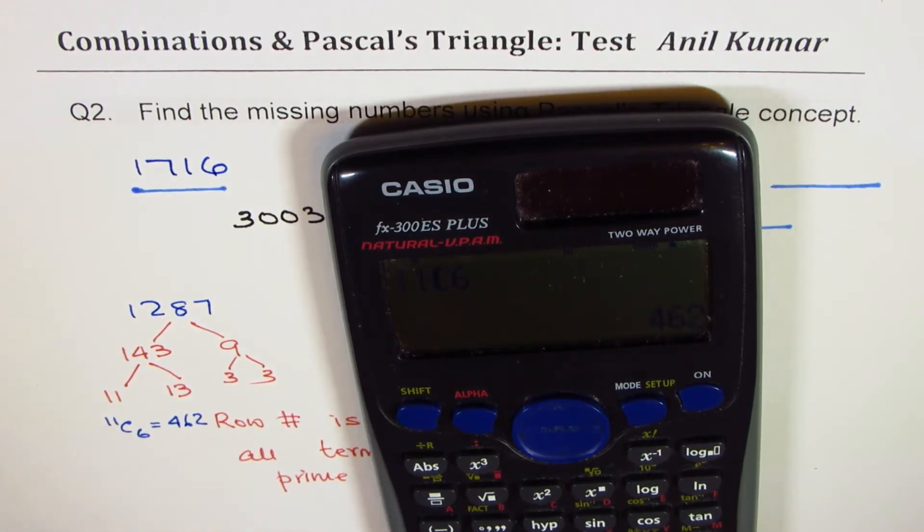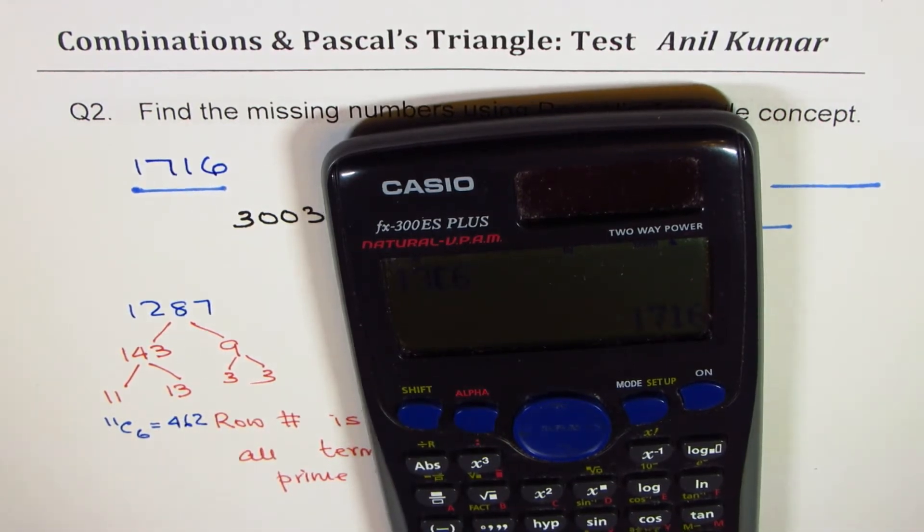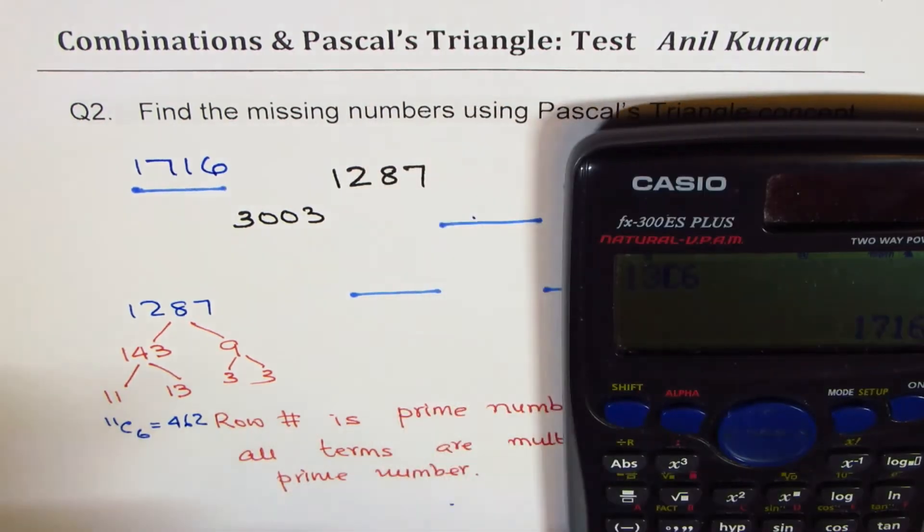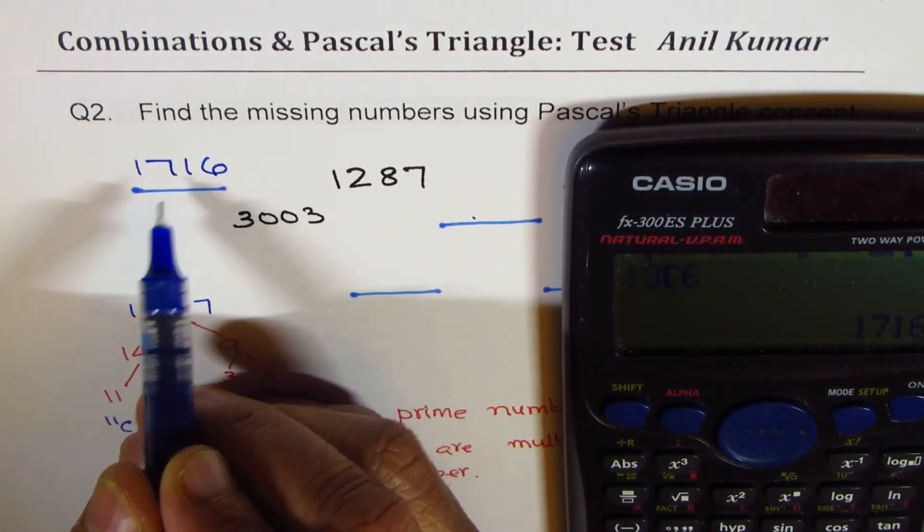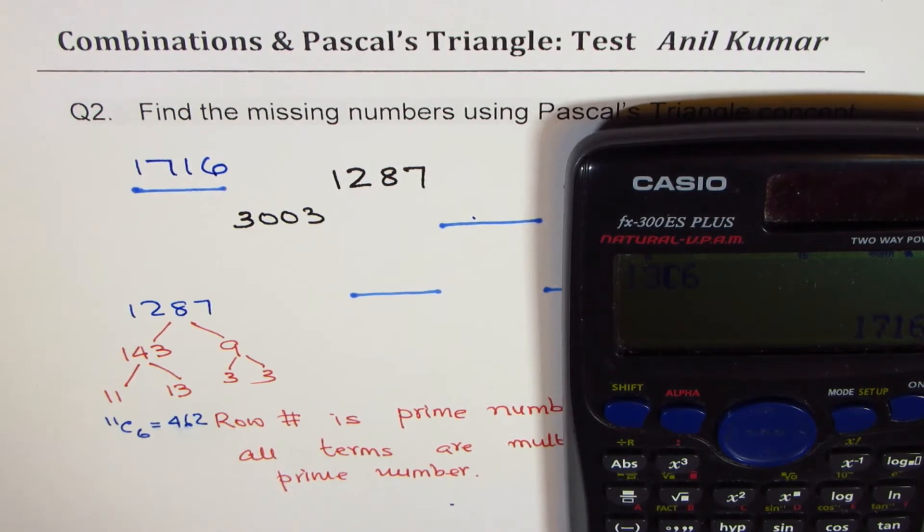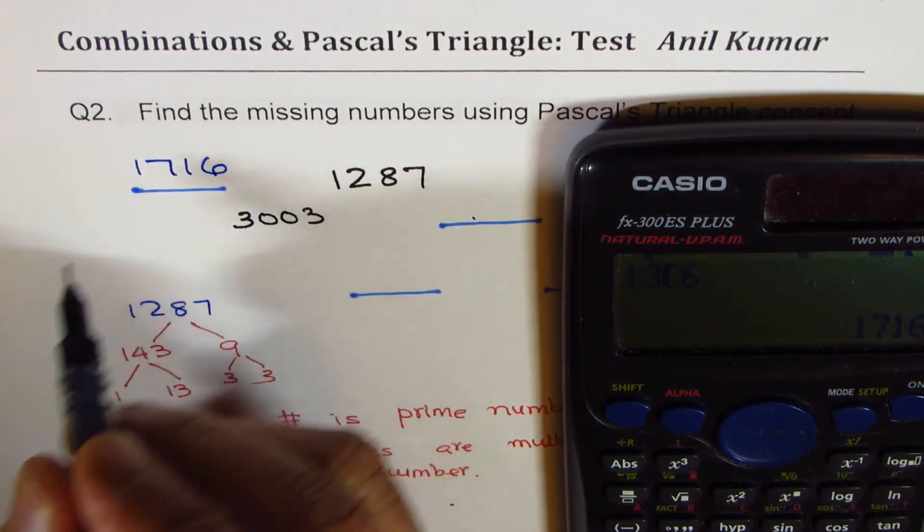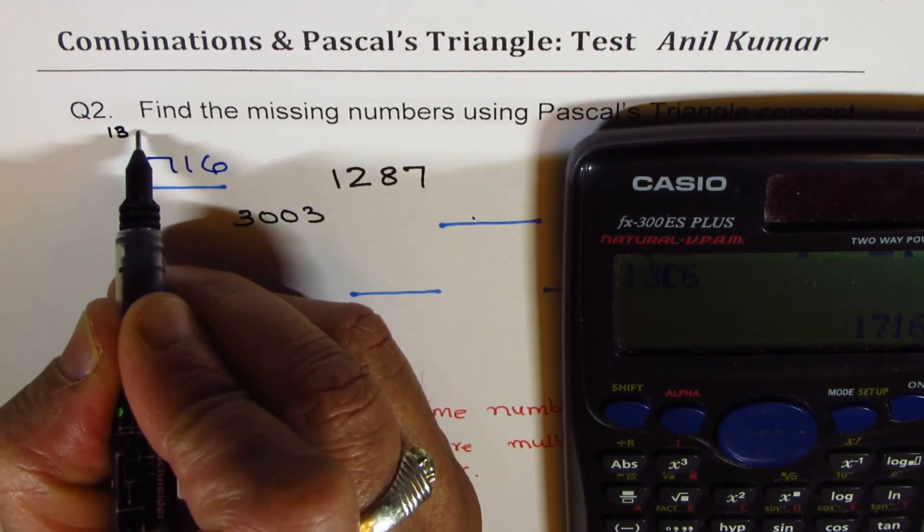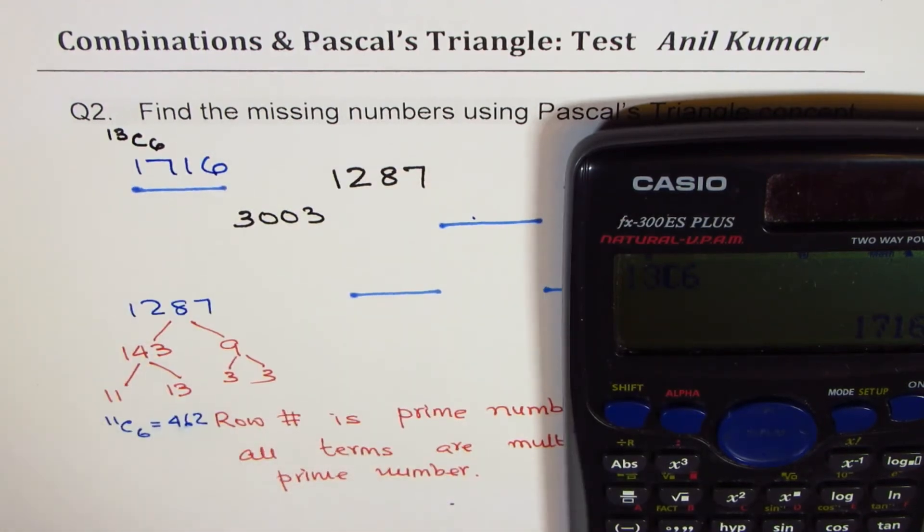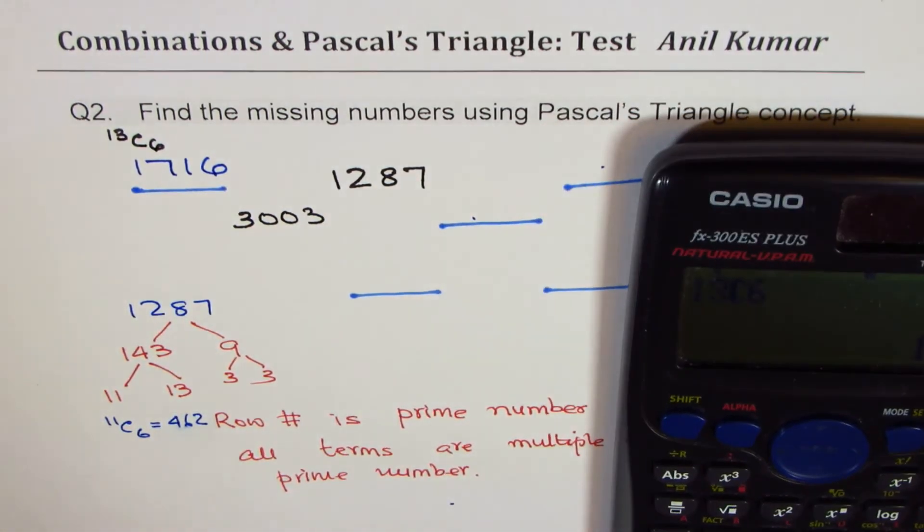So let's try 13C6. So 13C6 is 1716. So what we found is that 1716 is actually 13C6. So this number was found to be 13C6. Do you see that? So now we got the series and it is very simple to fill up all the values.